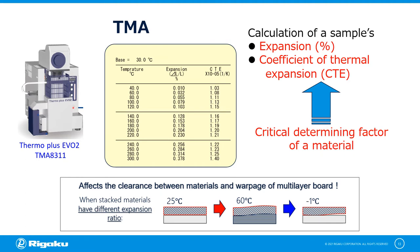If a stacked material has different CTE values, it may cause warpage of multilayer boards. When exposed to a higher temperature, one material may expand differently from the other, or when exposed to a lower temperature, the other material may shrink differently from the material stacked with it, creating gaps in between materials.